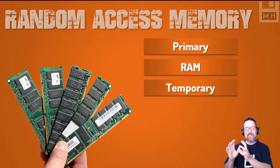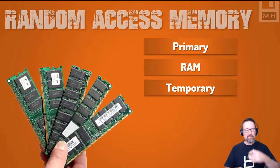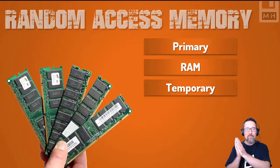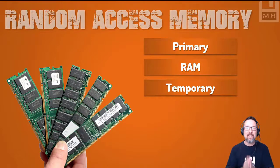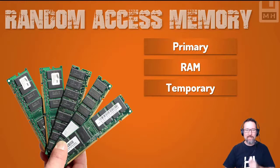Everything that's taking place on your computer sits in RAM. We're busy working on our documents, files, video editing, music — all that stuff is happening in RAM. When we're done, we save it to the hard drive, because the hard drive is permanent and RAM is temporary.